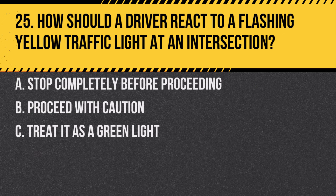Question 25. How should a driver react to a flashing yellow traffic light at an intersection? A. Stop completely before proceeding. B. Proceed with caution. C. Treat it as a green light. Answer: B. Proceed with caution. A flashing yellow light indicates the need to be alert and proceed carefully.